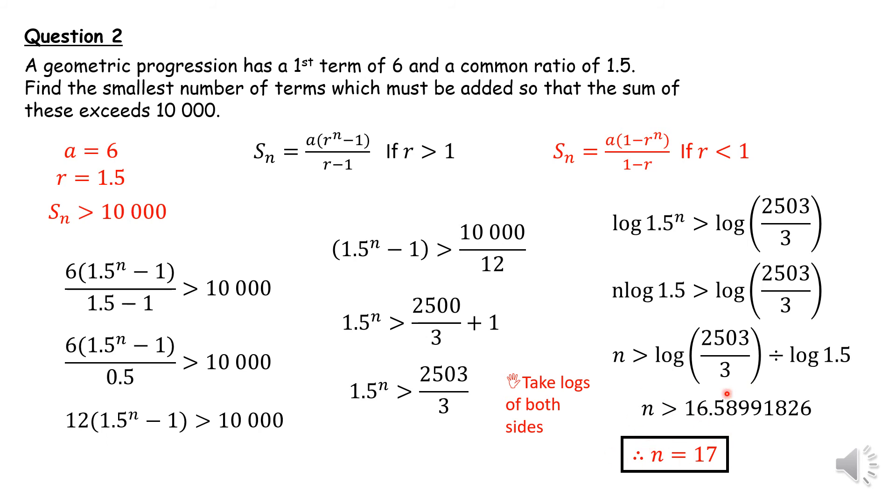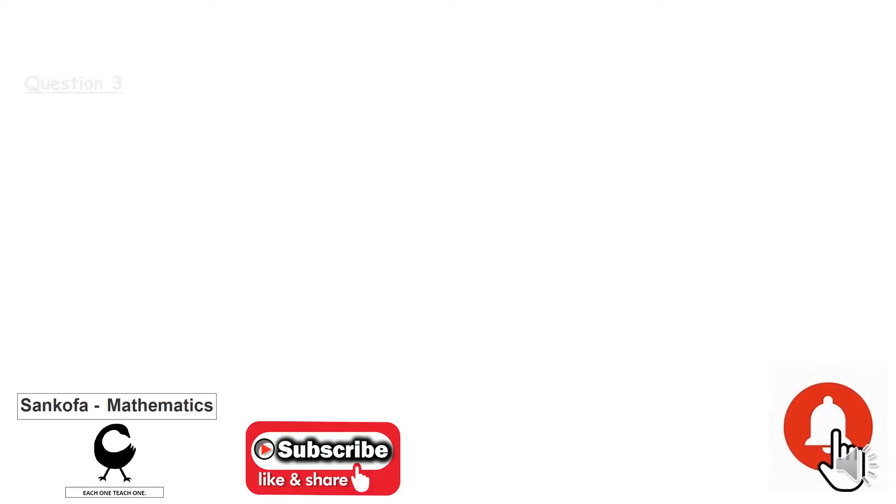You should get n is greater than 16.58. The number greater than 16.5 should be 17. Therefore, the 17th term is the smallest number of terms which must be added so that the sum exceeds 10,000.